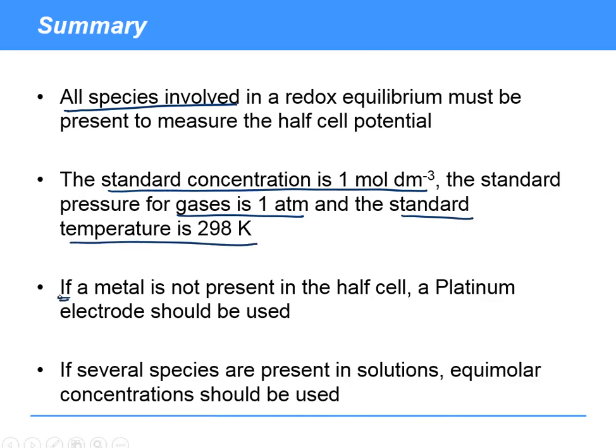If a metal is not present in the half cell, you should use a platinum electrode. And if several species are present in solutions, it's okay to have equimolar concentrations, the same molarity, the same mole concentration present. That's okay if you can't find solutions as concentrated as 1 mol dm⁻³.